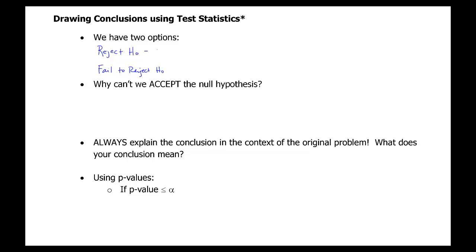If you reject the null hypothesis, that means you have enough evidence to say that the claimed value is not supported. The claimed value — remember it could be whatever the population mean or population proportion was claimed to be in your null hypothesis.